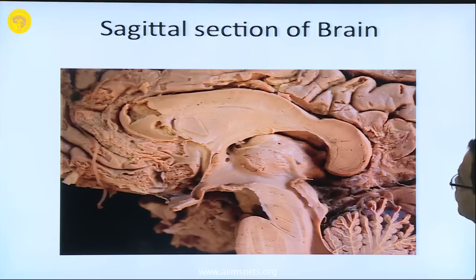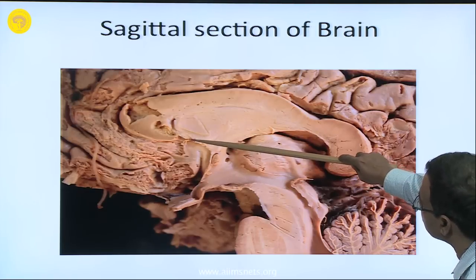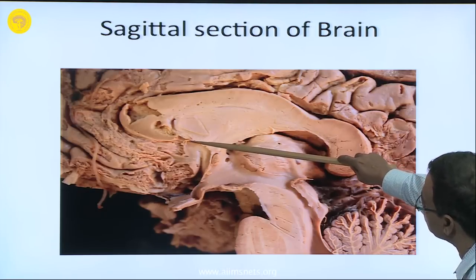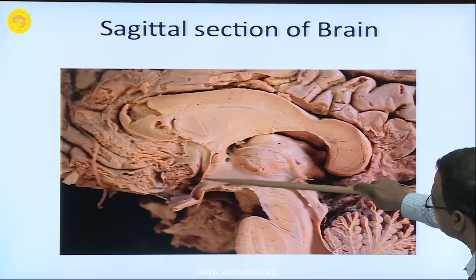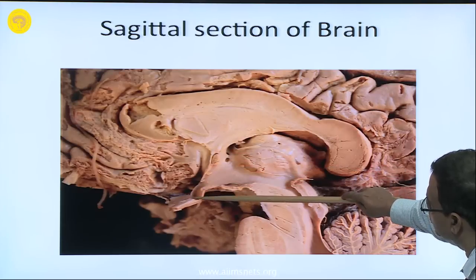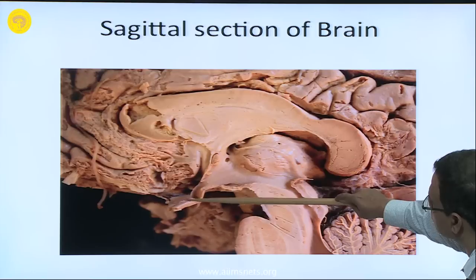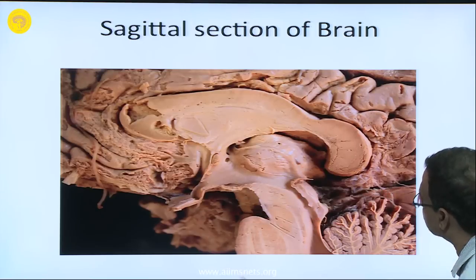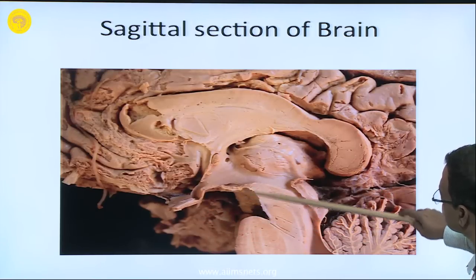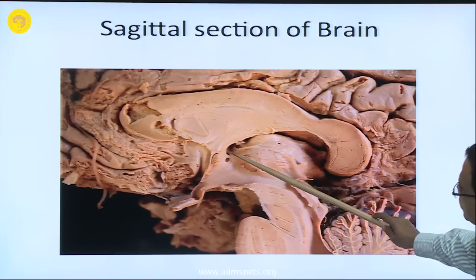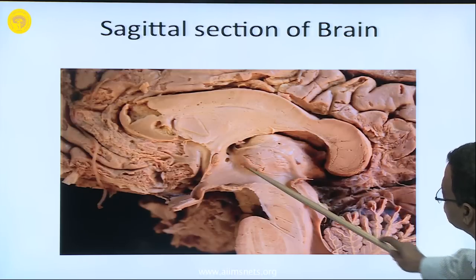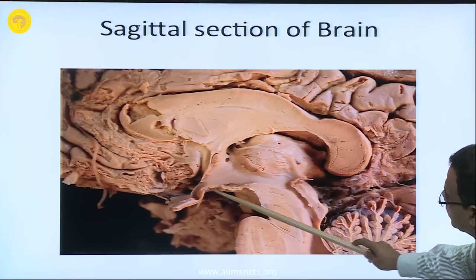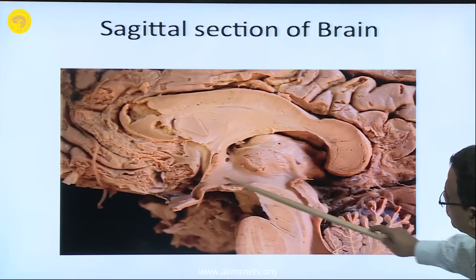I am going to show the different portions of the ventricles. From the rostrum, this is the septum pellucidum, going up to the optic chiasma here. Ventral to the thalamus — anterior and inferior to the thalamus — this area is the hypothalamus.